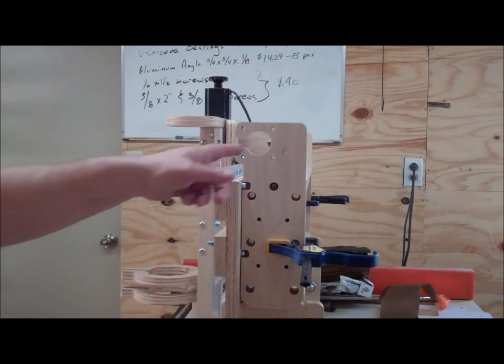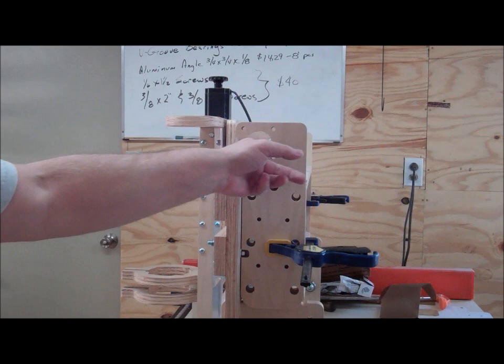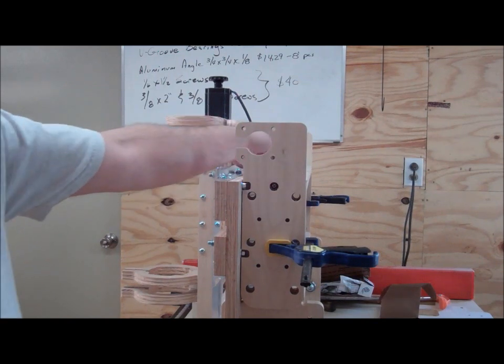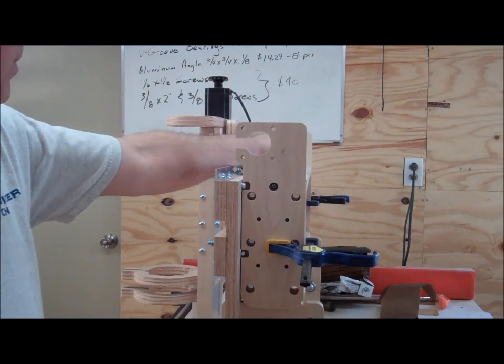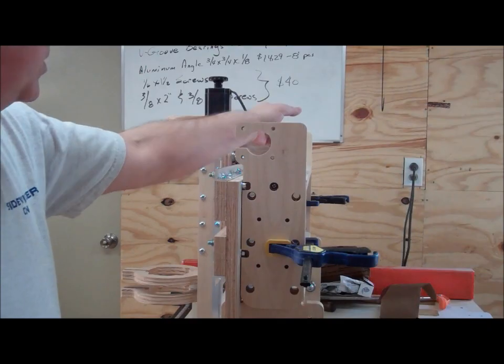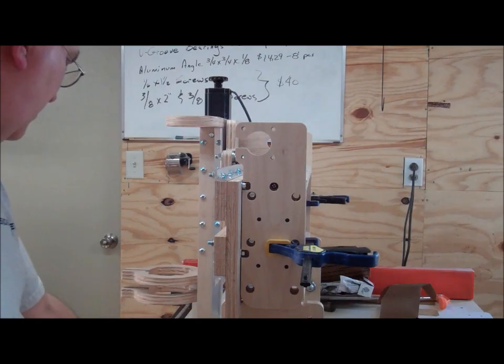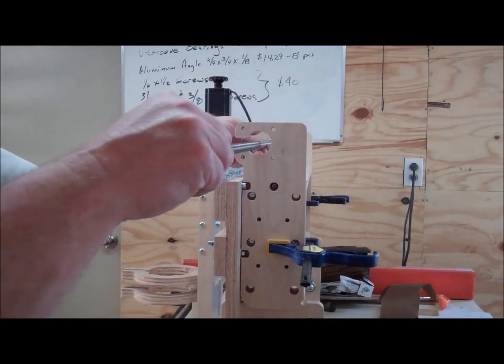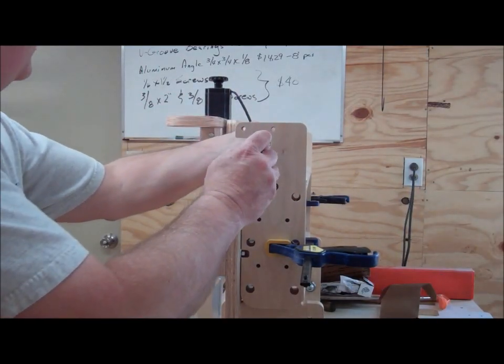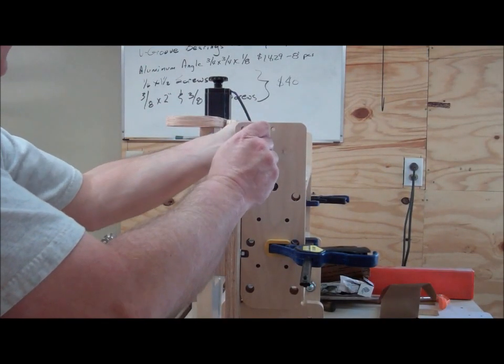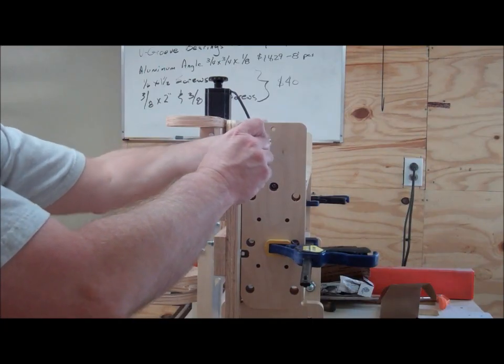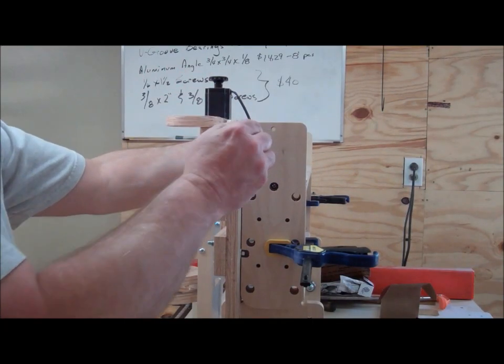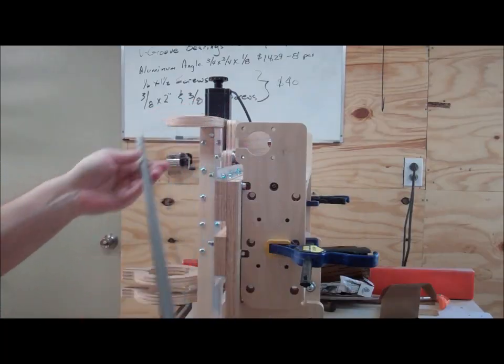You can kind of get an idea how this works. The motor mounts right here and you can kind of see how it lines right up through the Acme nut block and also goes all the way through, so the shaft would basically go through like this. You have the coupling in here that attaches to the motor and this would go through like this, and then you'd have your Acme nut that's gonna move it back and forth, which I'll try to get one of those installed here in just a little bit.